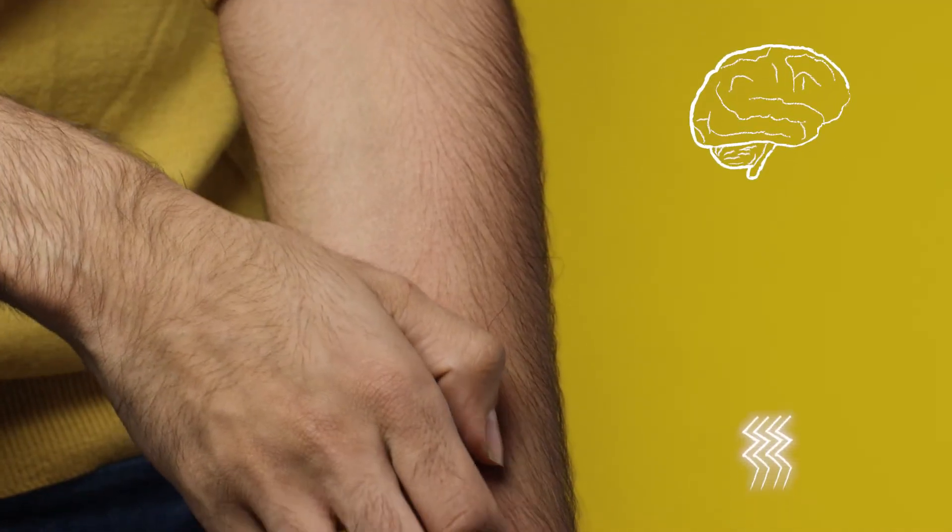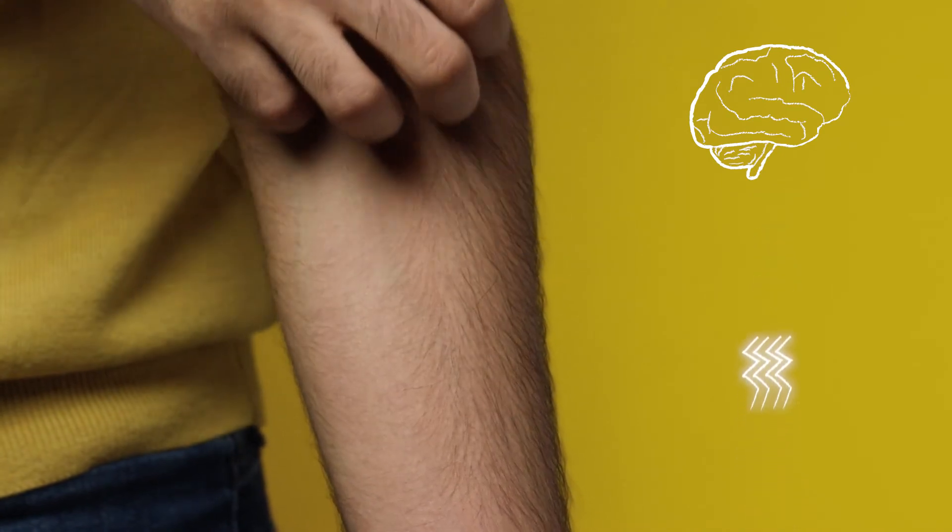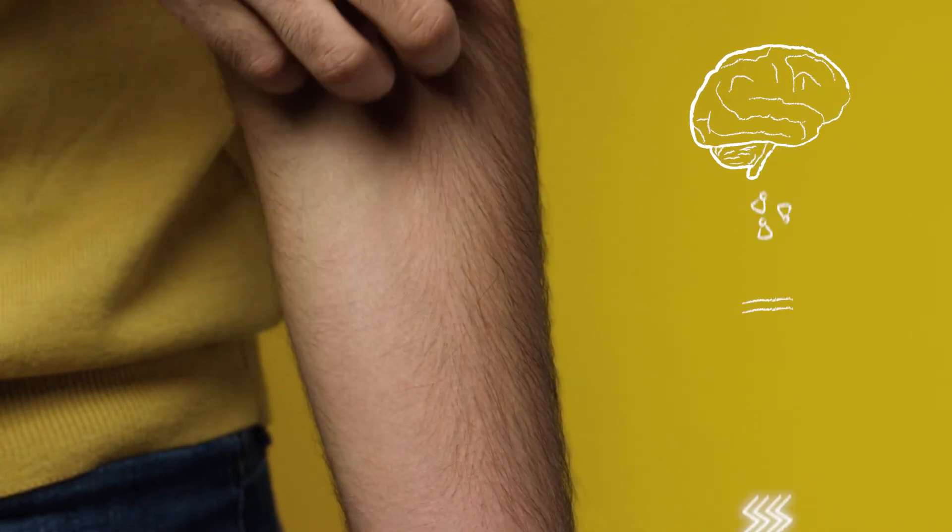Scratching blocks the itch by distracting the brain with pain. The pain triggers a release of serotonin, which blocks the pain that blocked the itch. And the loop starts again.